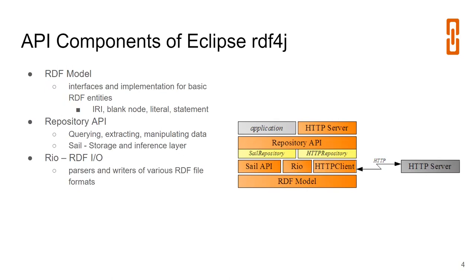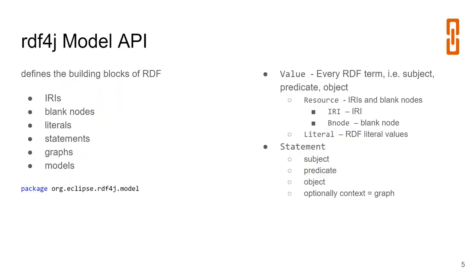Now we'll go deeper into the library. We'll start with the Model API — classes for IRIs, blank nodes, literals, statements, graphs, and the entire model which corresponds to the RDF dataset. The basic abstract class here is Value, which is the superclass of every RDF term. It doesn't matter whether the actual term is an IRI, a blank node, or a literal — all of those are instances of Value.